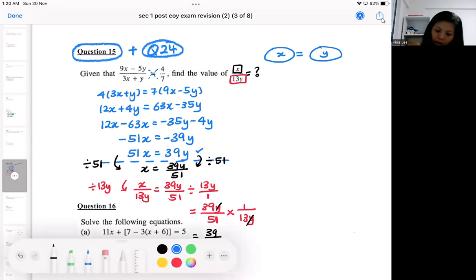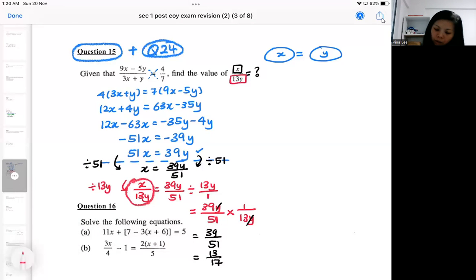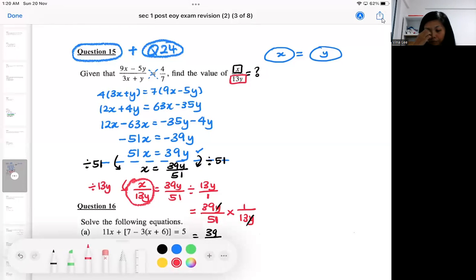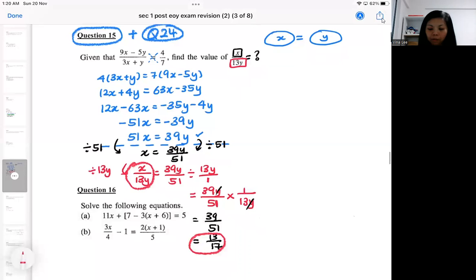So which means eventually this is equal to this. So basically, you need to divide things on both sides. So that will be one method.